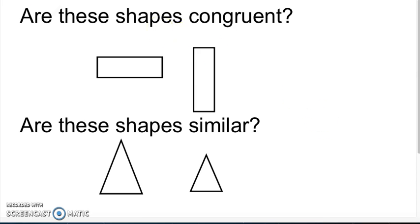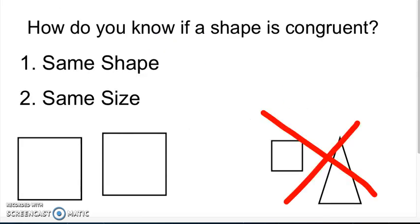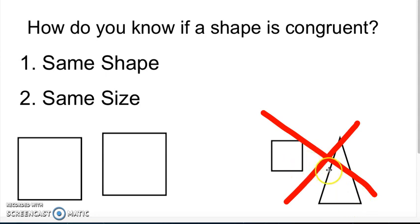Let's start with congruent shapes. How do you know if a shape is congruent? The first thing is the figures need to be the same shape. These shapes here are both squares. Over here, these shapes could not be congruent because they're not the same shape — this is a square and this is a triangle.